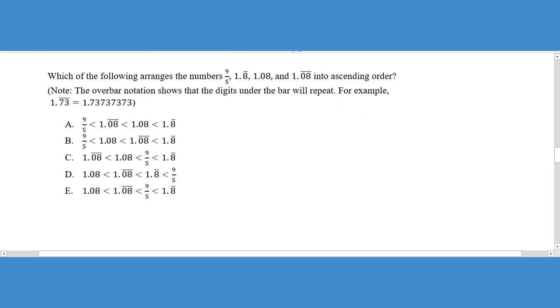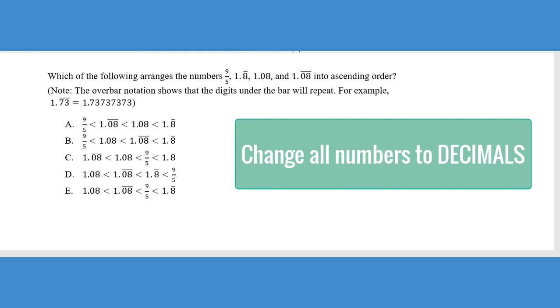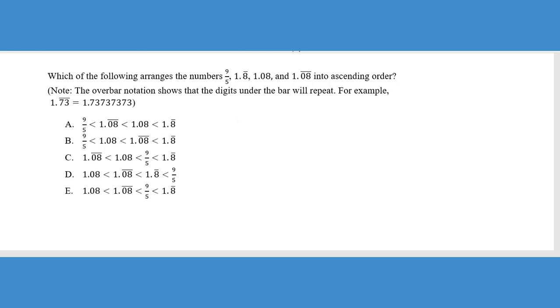This next question is more of an ordering question, not order of operations question. The biggest tip that I could give you on working problems of this nature is when they give you a bunch of numbers that are written in different formats - either they're fractions, they're decimals, they're radicals - you want to put them all in the same format. And the format that I think is the easiest for you to get to is decimals.